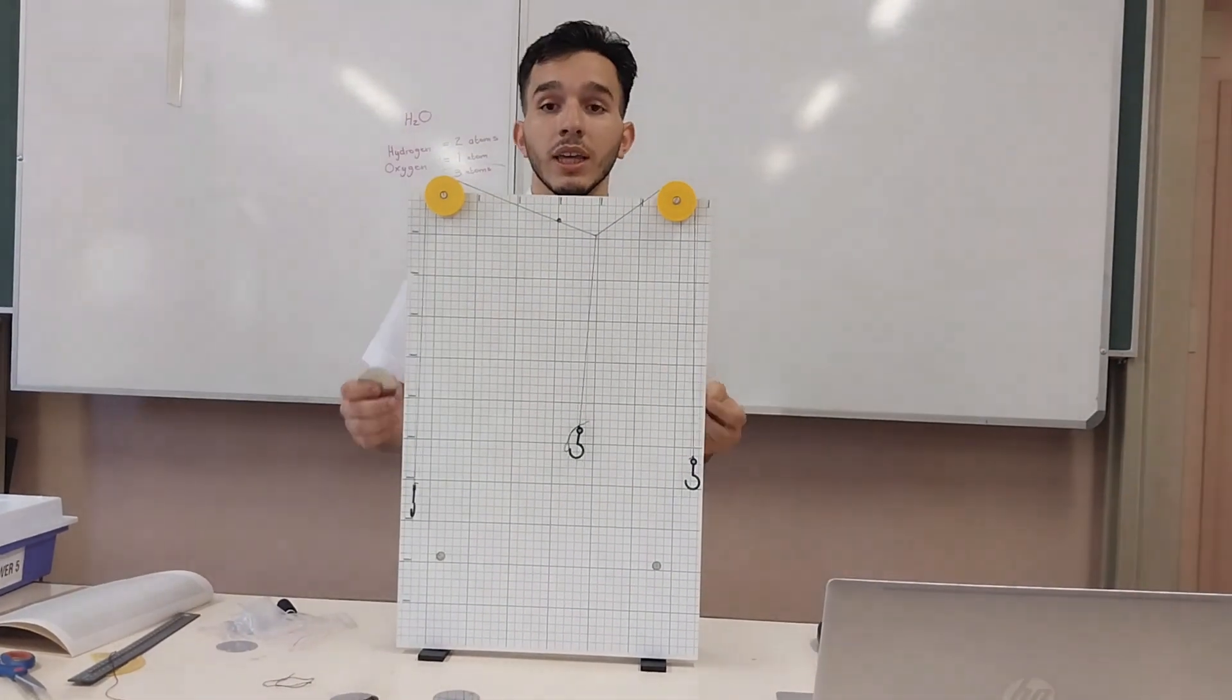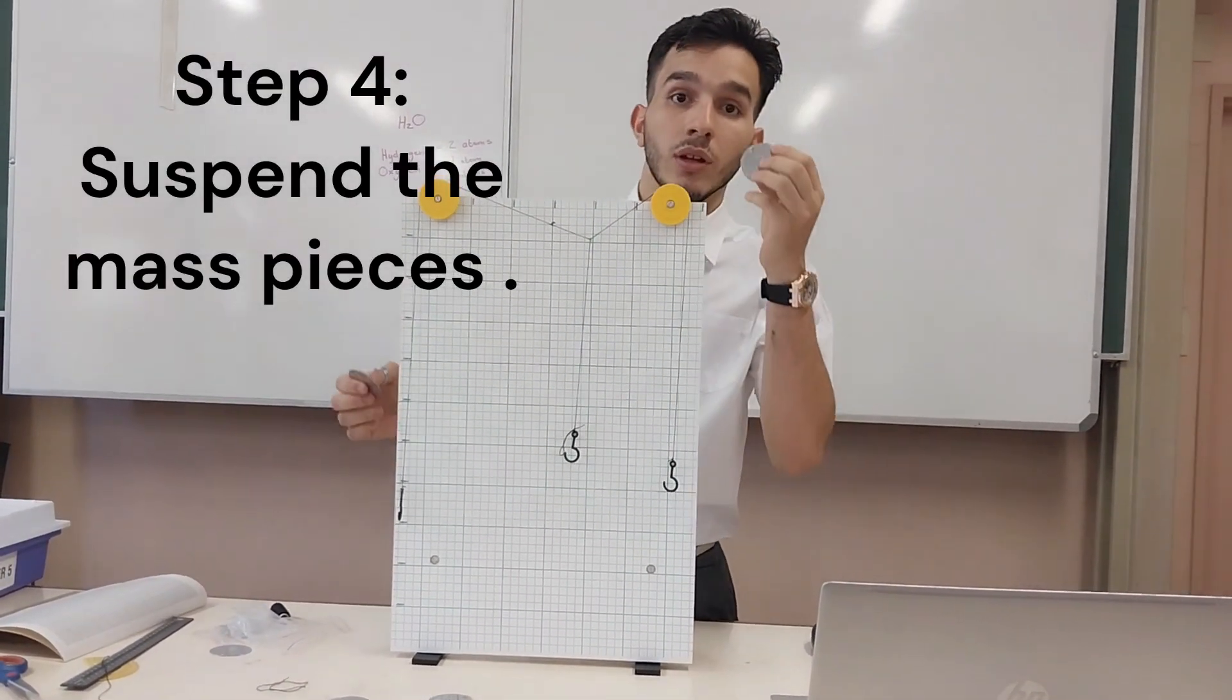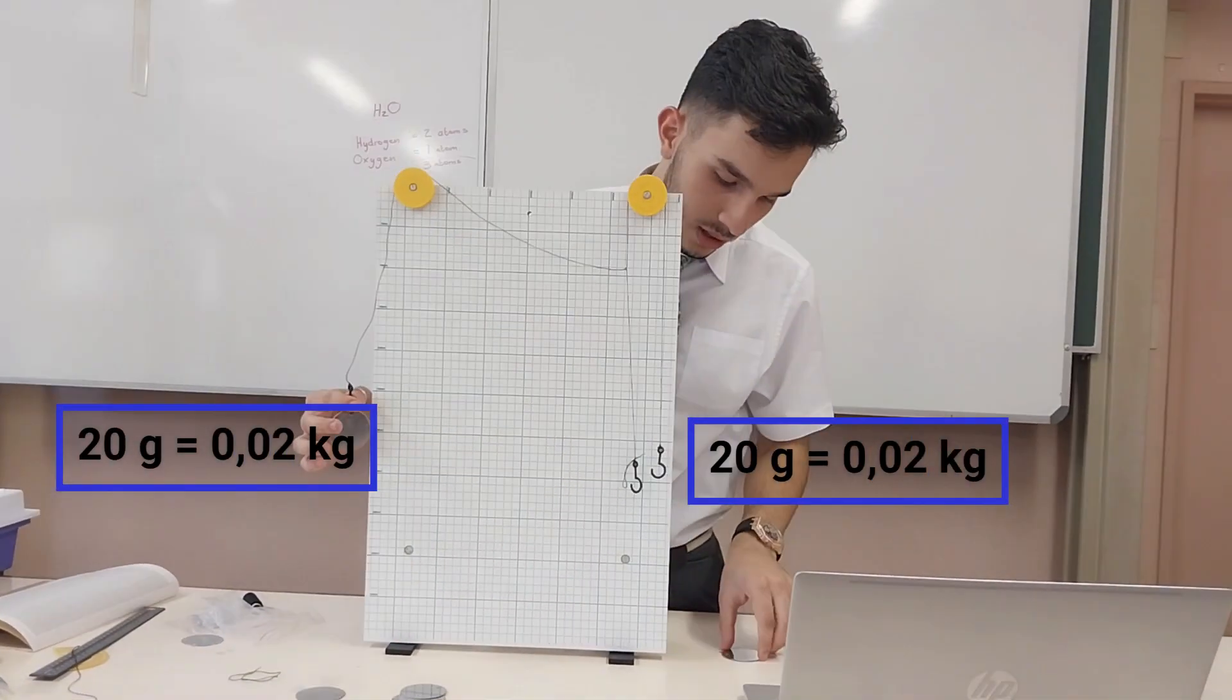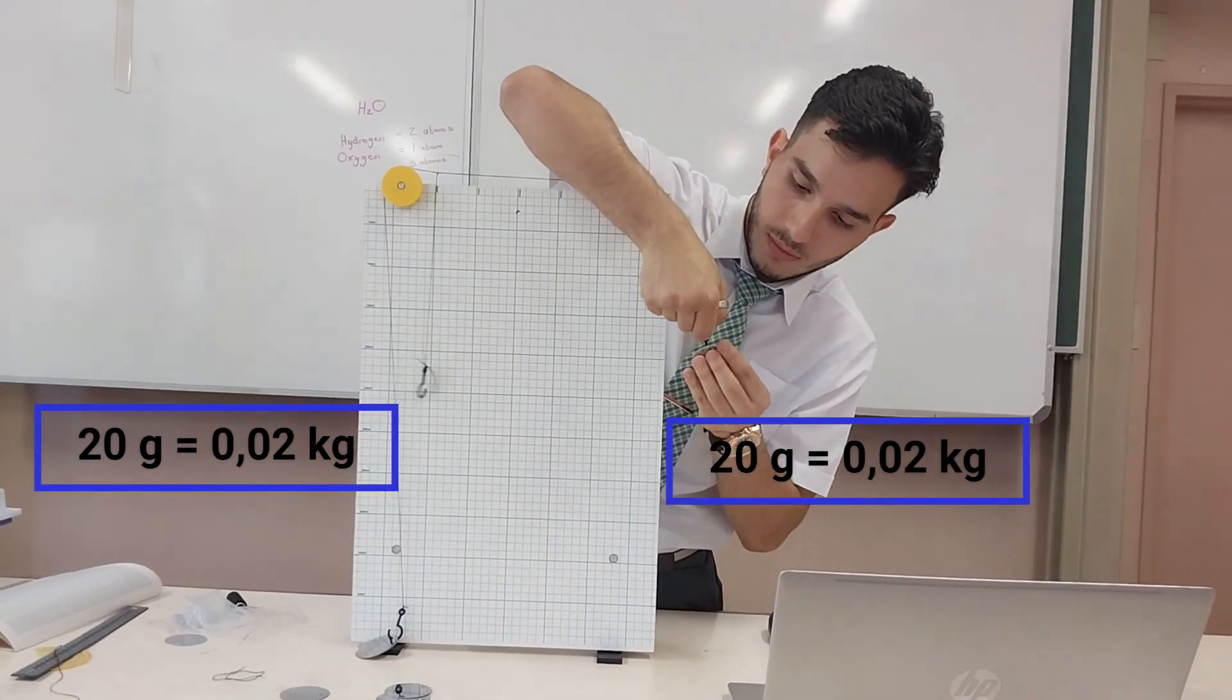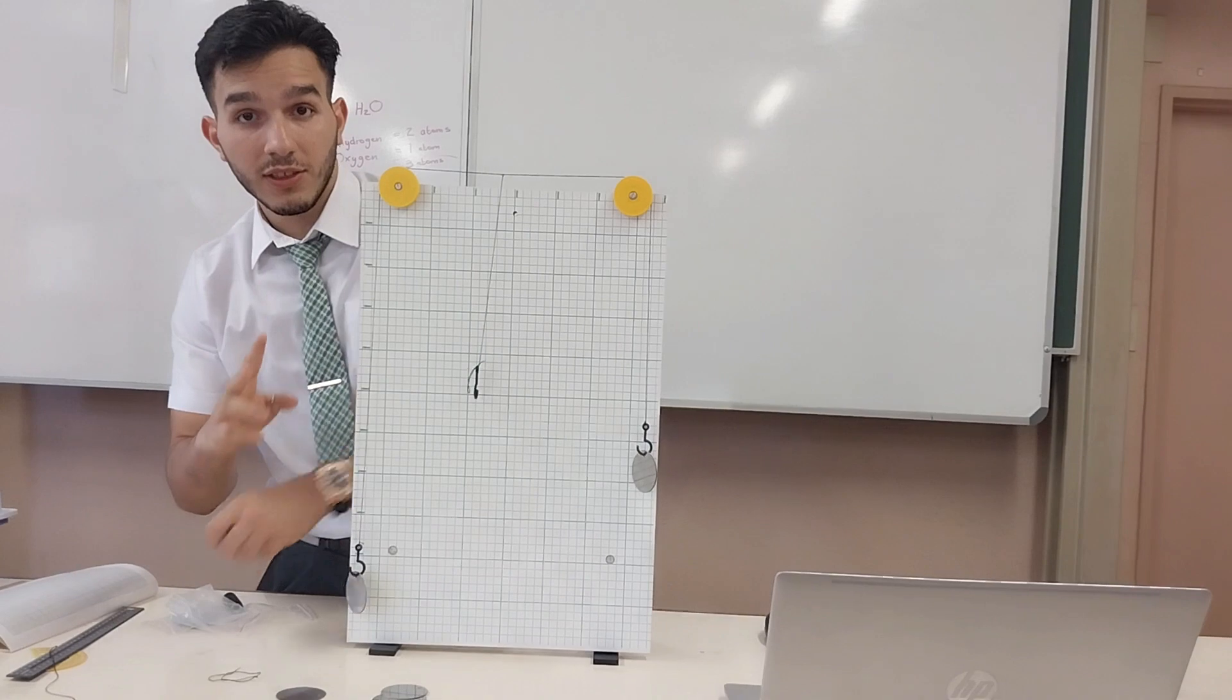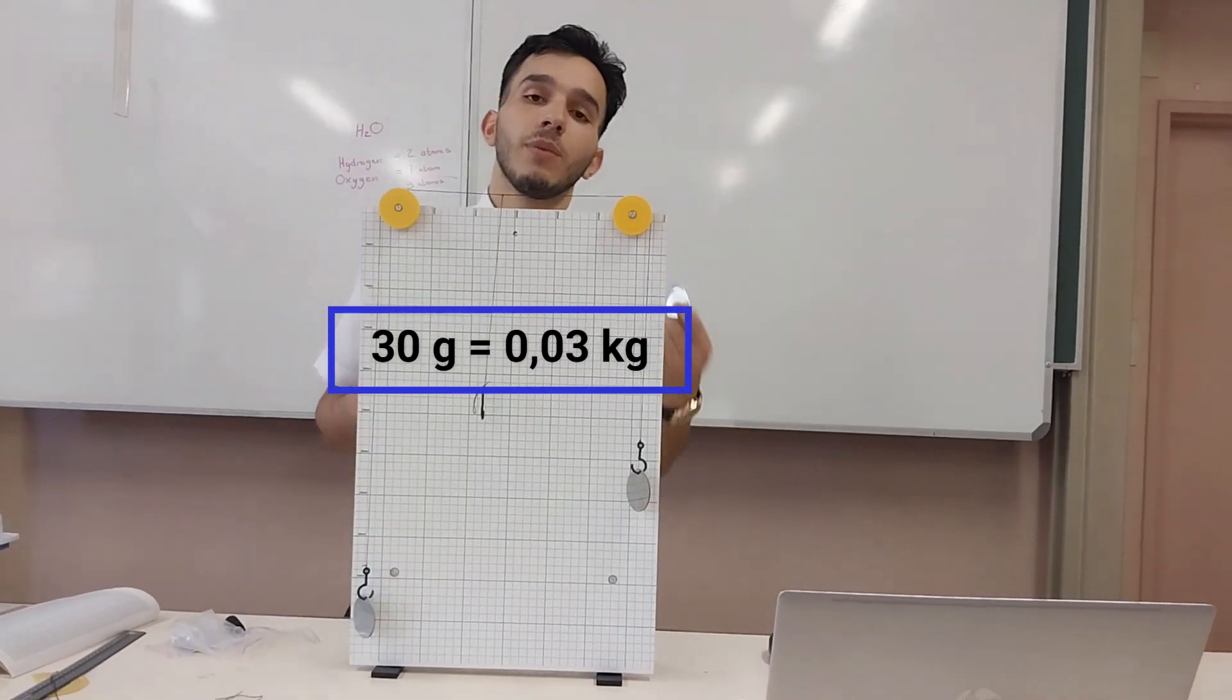Now in both strings that are within the pulleys we're going to put 20 grams and 20 grams. The third string will have three mass pieces of 10 grams which will be 30 grams.